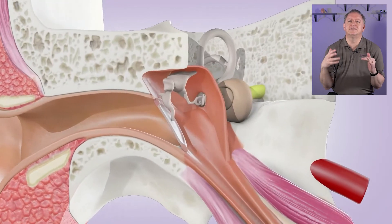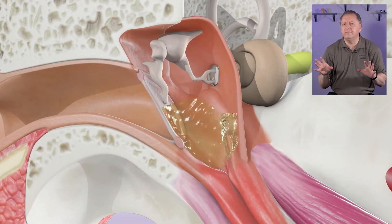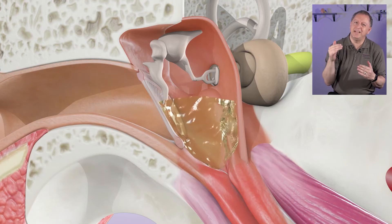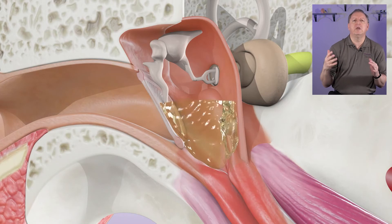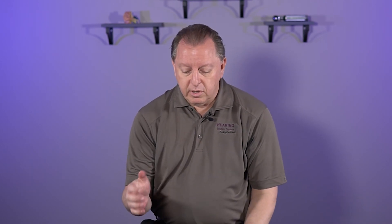That fluid fills up the middle ear space. At first it's a serous fluid — just a clear fluid, not infected. But if it gets worse and stays in there, it'll have a green or yellow tint to it, depending on what type of bacterial infection is going on in the ear. What you'll then have is a pretty significant hearing loss.